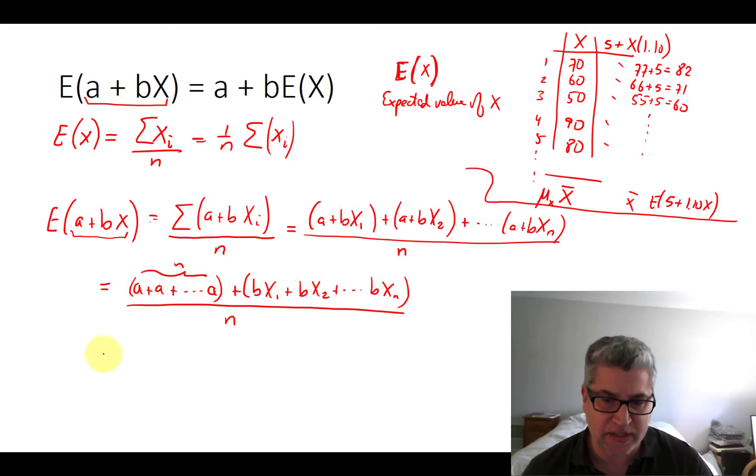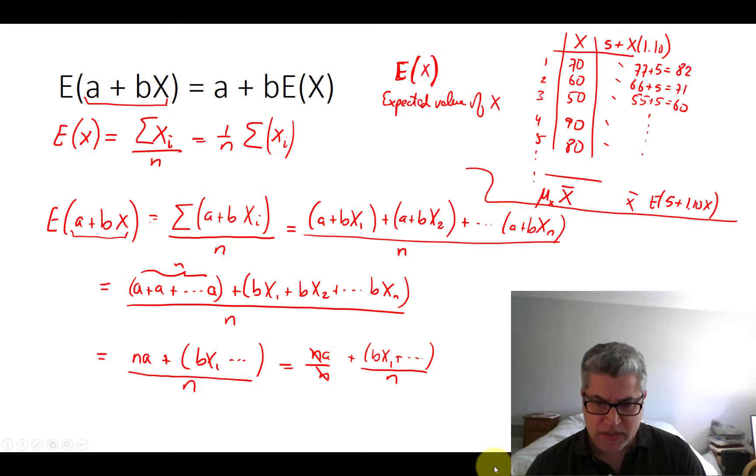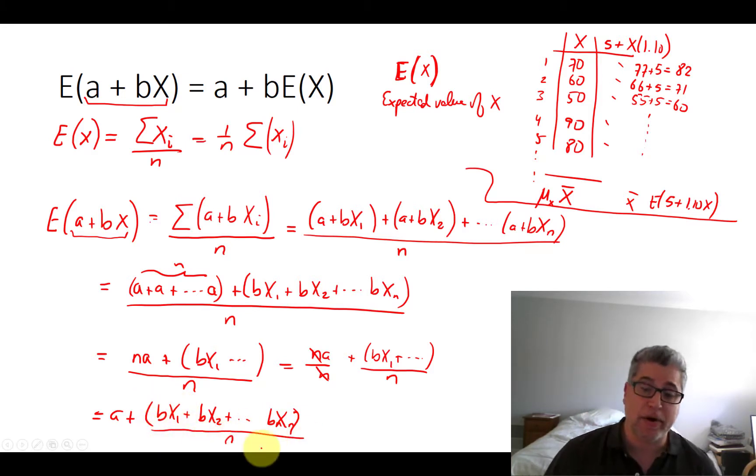Now if we have n of these a's, then that's just na. If we had three of them, that would be 3a, a plus a plus a. So na plus all of these b's. Now notice that I can split this fraction up and then cancel the n's. So we have na plus bx1 plus bx2, all the way through bxn. We can just split up that fraction and then the n's cancel.